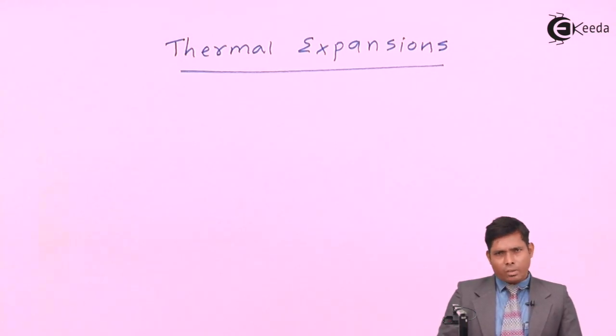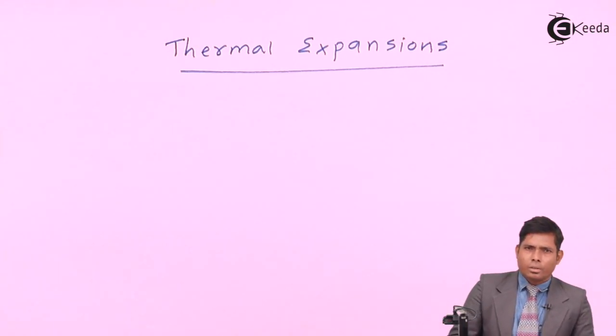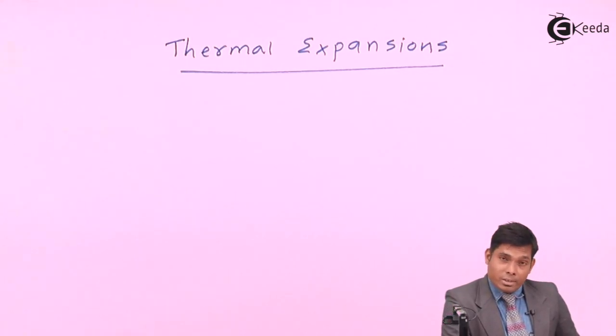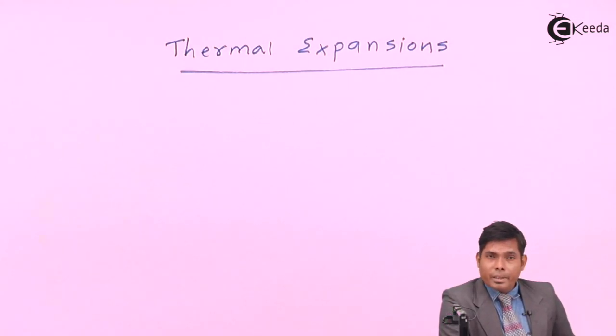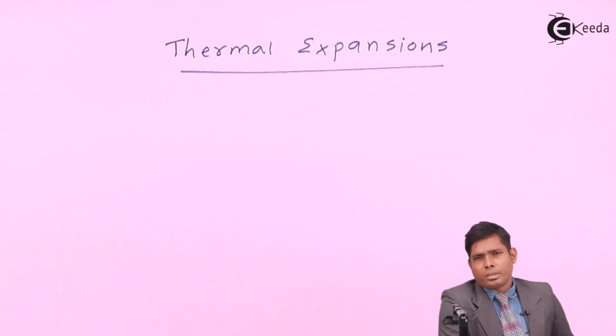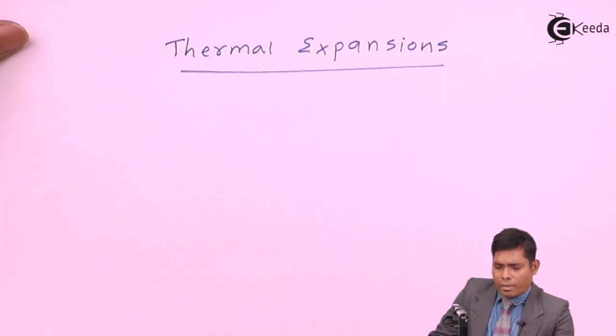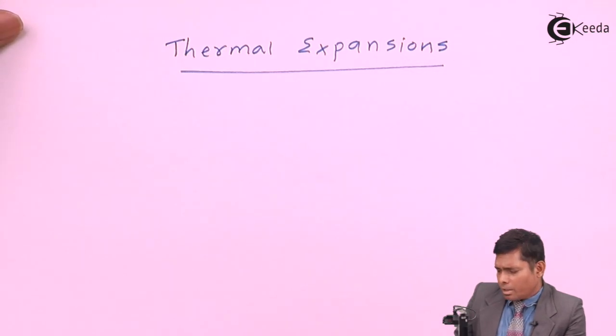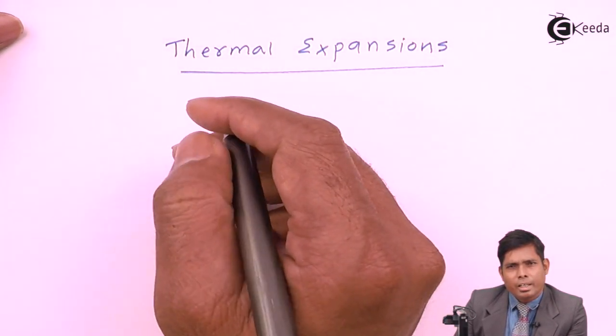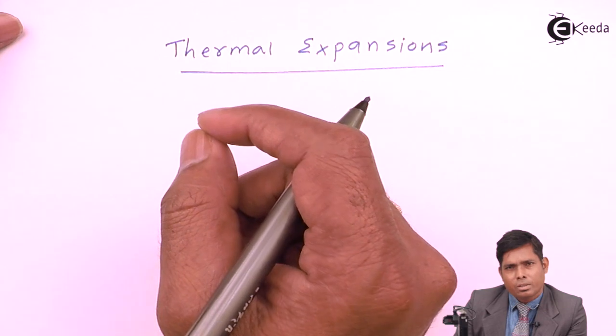expand. In case of a solid, its length might increase, its area might increase or its volume might expand. So in case of a solid, because there are three types of solids in terms of its dimension, the expansion will be of three types. First I will write the definition of thermal expansion. Thermal expansion means expansion of a substance due to application of heat.